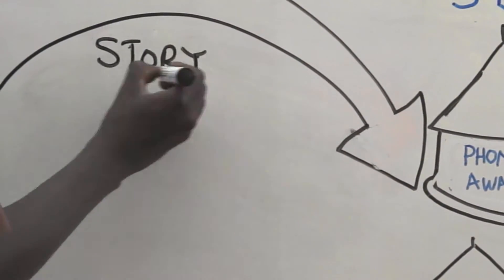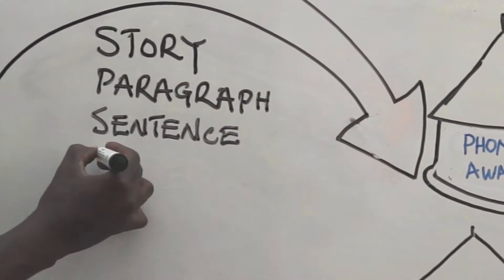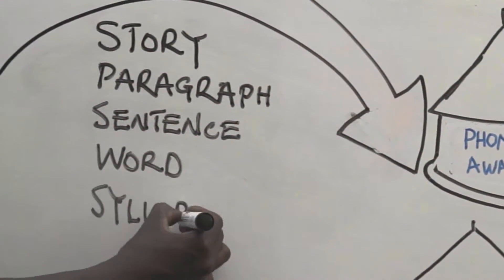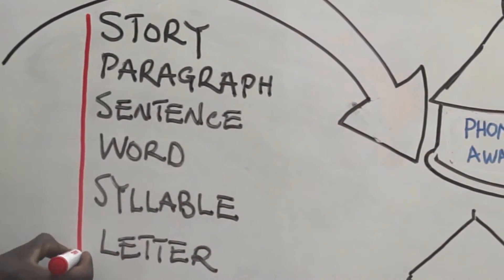After pupils get interested and involved in the stories, the teacher can gradually address the other parts of text: paragraphs, sentences, words, syllables, and letters.